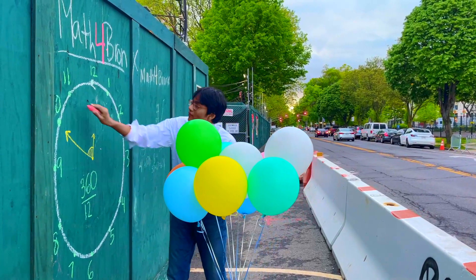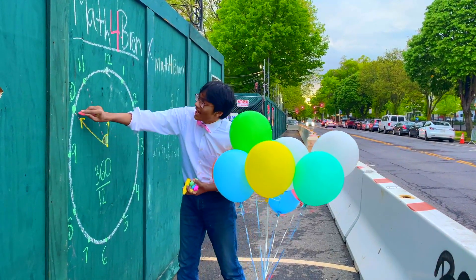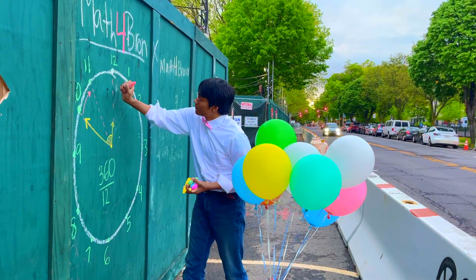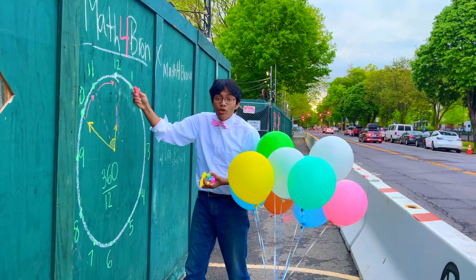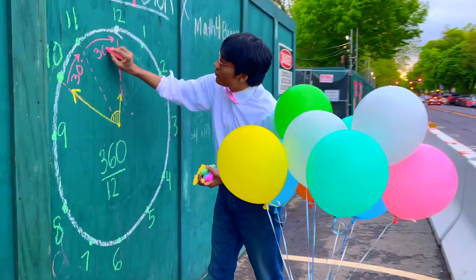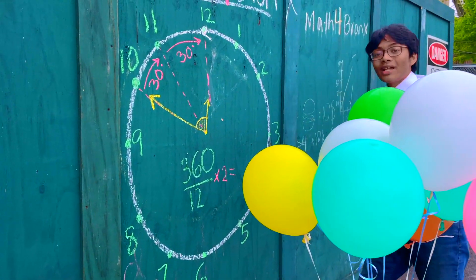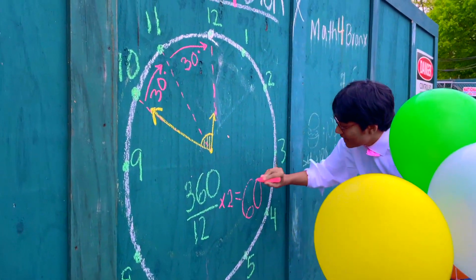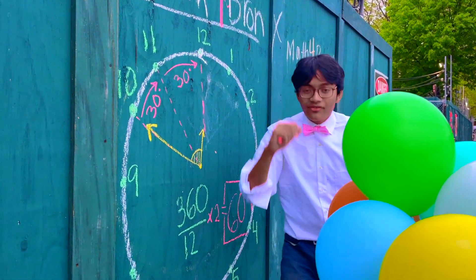360 divided by 12 gives us the amount of degrees per hour. So let's break up the angle from 10 to 12 into two parts: 10 to 11 and 11 to 12. Each takes 30 degrees, so you multiply 360 over 12 by 2, giving you a final angle measure of 60 degrees for the smaller angle between 10 and 12 o'clock.